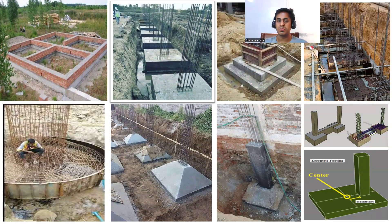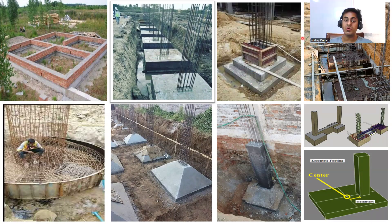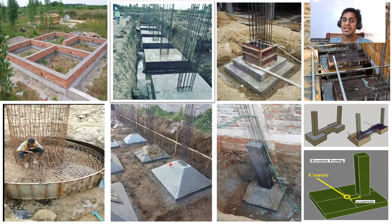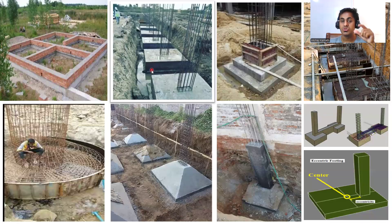Apart from step footing, we have one more type called a sloped footing, or a few people call it a trapezoidal footing. This is also isolated footing — isolated because on one footing only one column is there. The difference is the shape: the pad footing has a uniform depth throughout, the step footing has two or three steps, and this is the sloped footing.